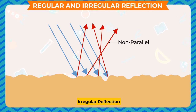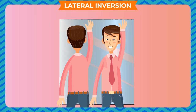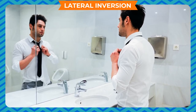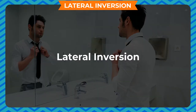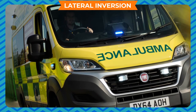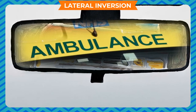We are able to see all the things around us by irregular reflection. Lateral Inversion: If you stand in front of the mirror, you observe that your left hand becomes your right hand and your right hand becomes left. The same happens for your ears. The phenomenon in which the left of an object appears to be the right and right appears to be the left is called lateral inversion. The ambulance has words written inverted on its front so that drivers ahead can view the correct word in their rear view mirror and make way for it.